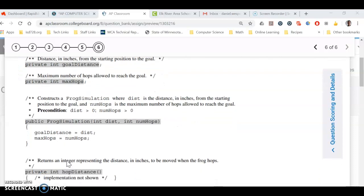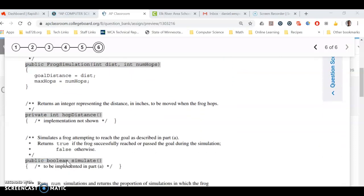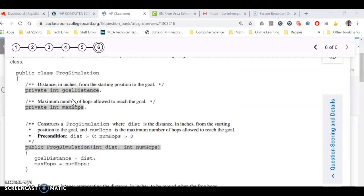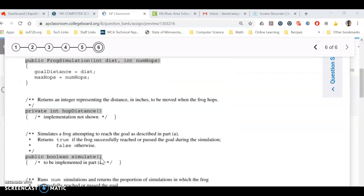So on part A, we're going to simulate a frog hopping and see if it reaches its goal distance or not. Notice that no variables come in. They are these two variables which are accessible because they're outside of any method. So we can use them in our method A without having to have them be passed in. There's nothing being passed into this method.